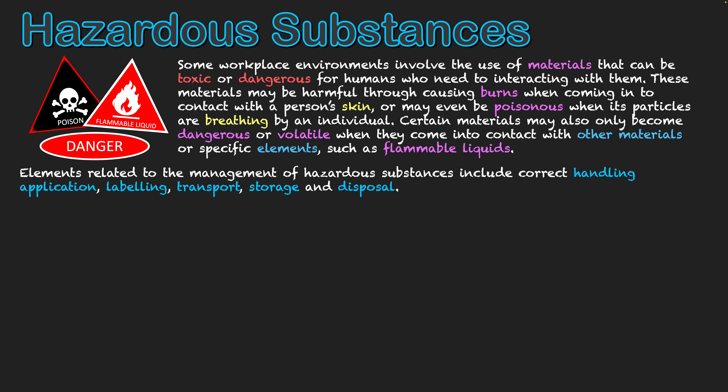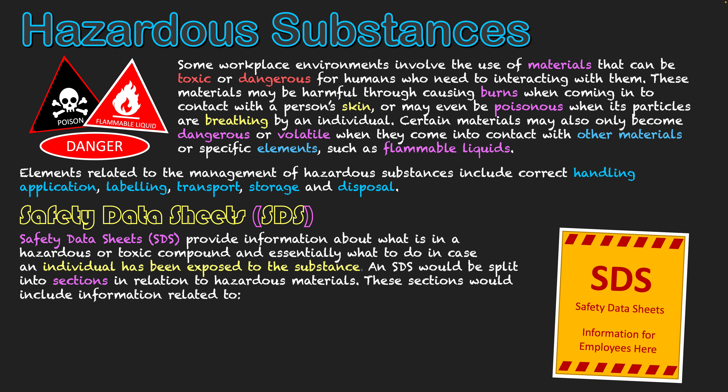Those are all the elements relating to hazardous substances, and obviously it's a lot to know — especially if you're working in an environment with many different types of hazardous substances. For this reason, workplaces need to have specific documentation known as Safety Data Sheets. These safety data sheets provide information about what is in a hazardous or toxic compound within specific workplace environments, storing information about all compounds. Workers can refer to them for assistance with handling, application, and how to transport these items.